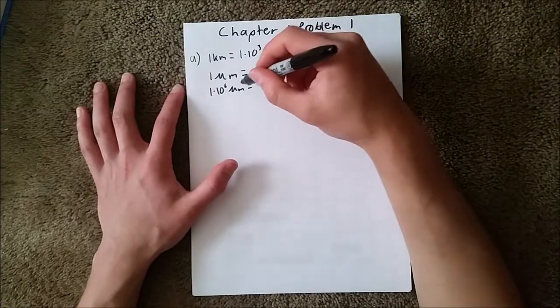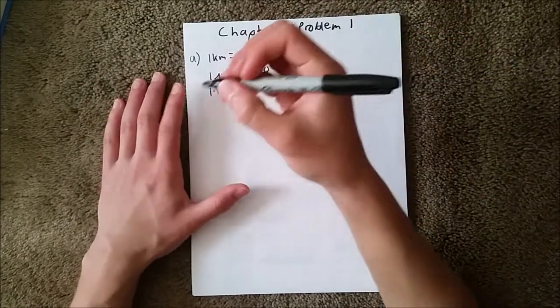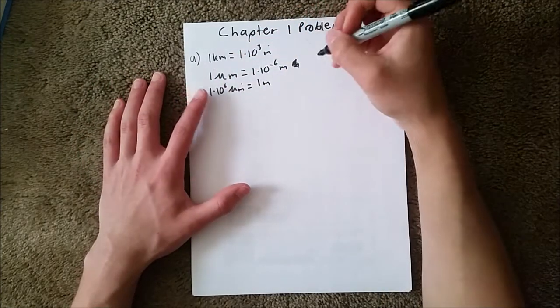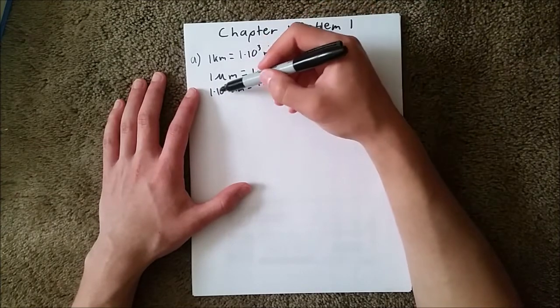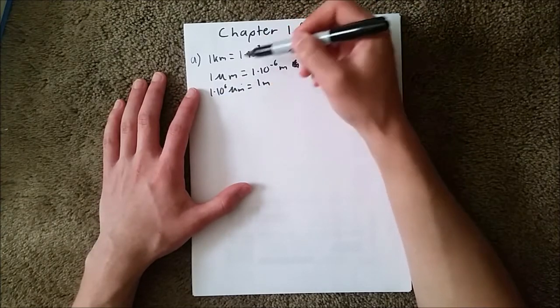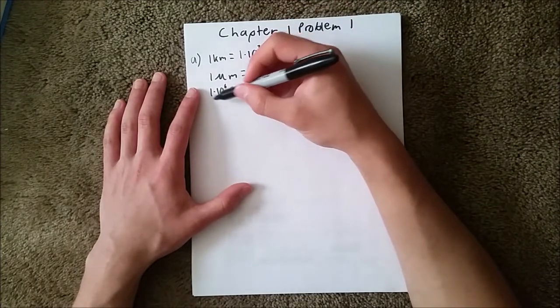So, what we need to do is multiply these two numbers together, and when we do that, since it's 1×10³ and 1×10⁶, we just have to add the exponents because the base is the same, the base is both ten.